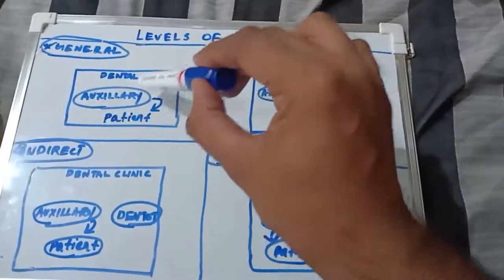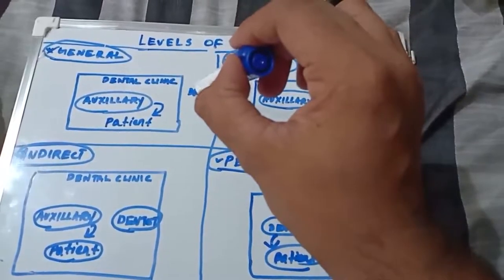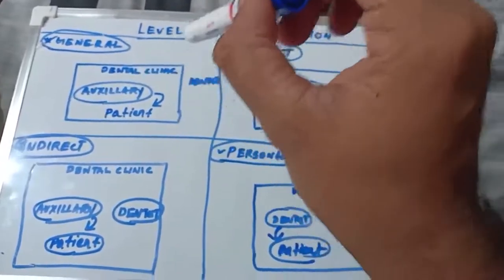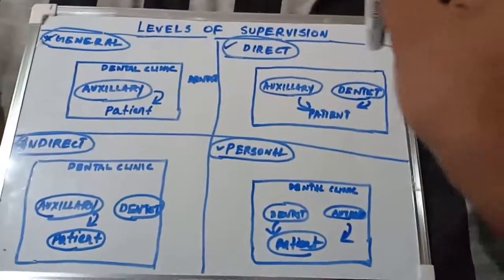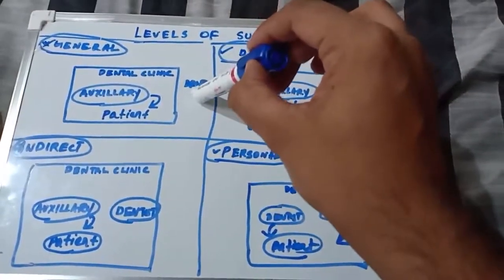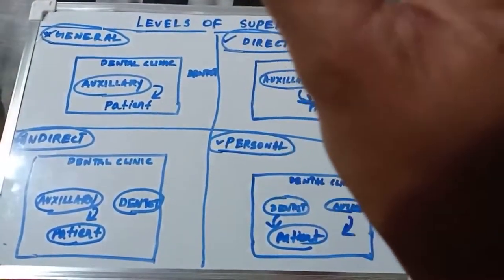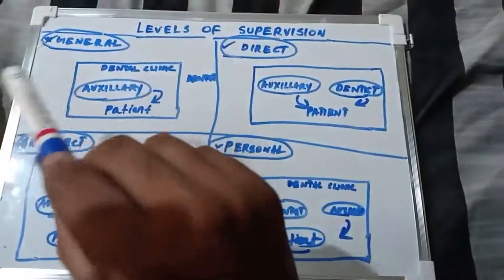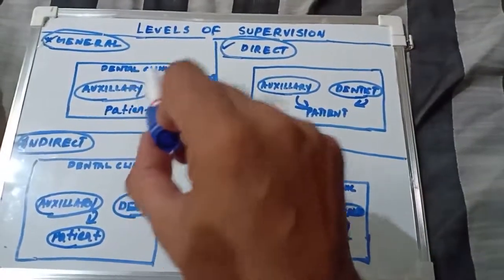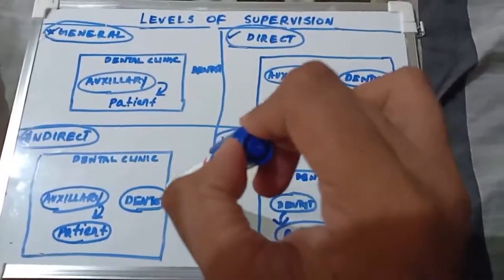In general supervision, the auxiliary is working on the patient in a dental clinic under the dentist's instructions. The dentist has given proper instructions on what has to be carried out, but the dentist need not be inside the dental clinic — the dentist might be out somewhere for a consultation. The dentist is not presently in the clinic, but has given clear instructions to the auxiliary. That is general supervision.